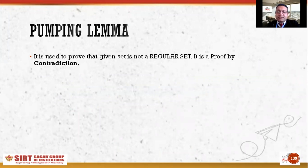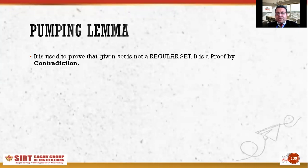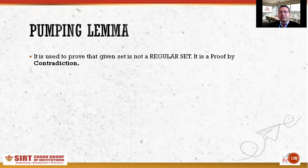Pumping lemma is proved by contradiction. That means we take a contradictory assumption as truth at the outset, then perform some tasks. At the end, if the assumption is found to not hold, we confirm it was contradictory — and in this way we prove whether the given set is regular or not.